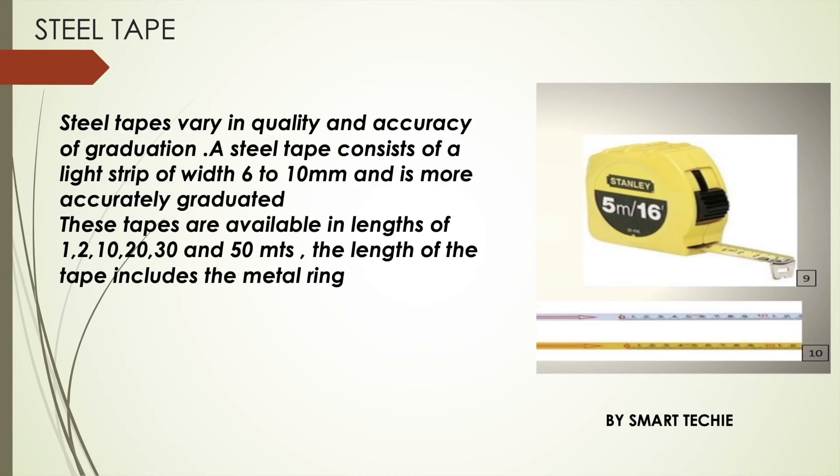Steel tapes vary in quality and accuracy. A steel tape consists of a light strip of width 6 to 10 mm and is more accurate.